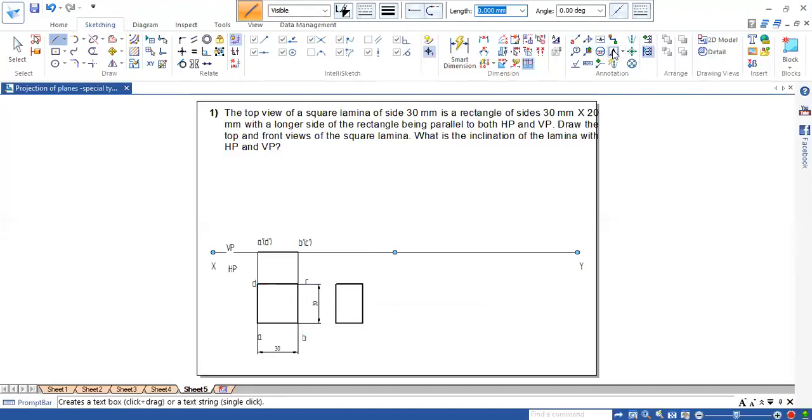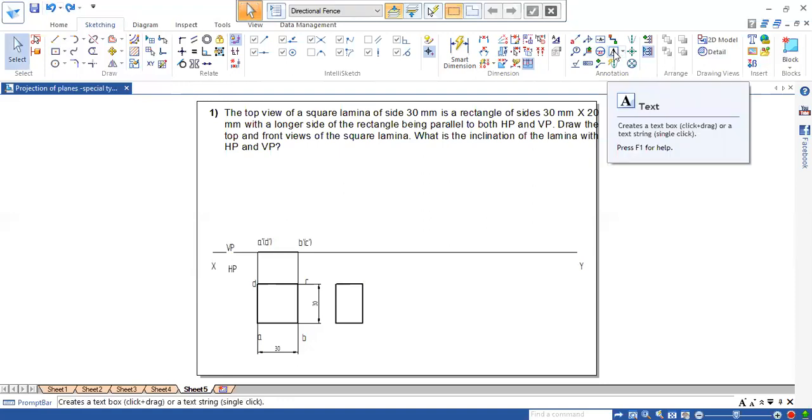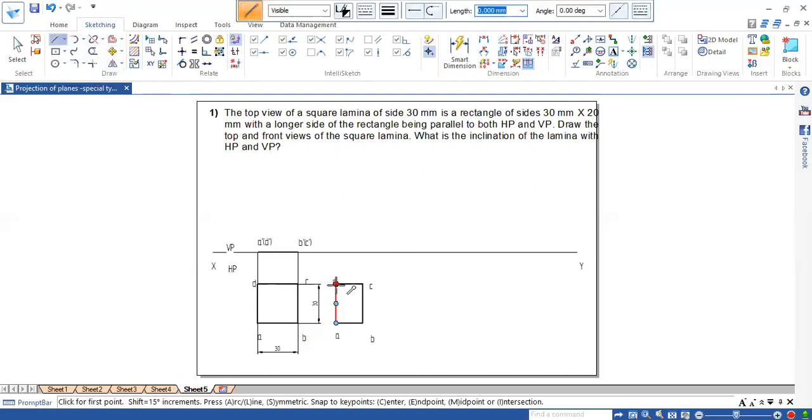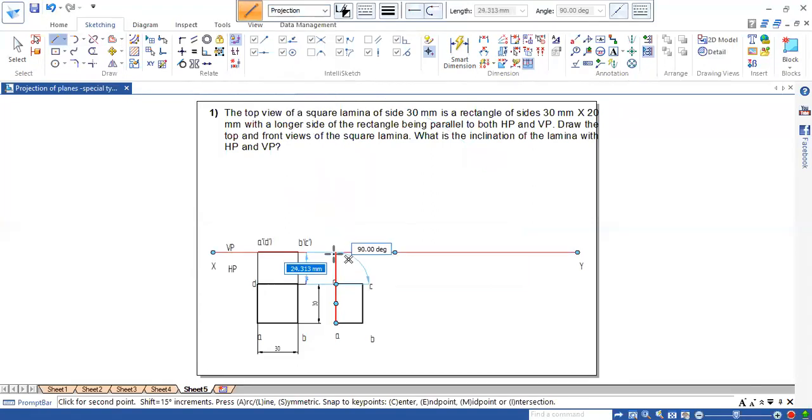So here A dash, B dash, C dash and sorry. It's a top view. So it is A, B, C and D. Okay. Now project. Use the projection line. Project onto X, Y line. This you extend.